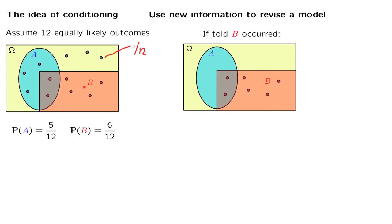How about the outcomes inside the event B? So we are told that one of these has occurred. Now, these six outcomes inside the event B were equally likely in the original model, and there is no reason to change the relative probabilities. So they should remain equally likely in the revised model as well. So each one of them should have now probability 1 over 6, since there are six of them.